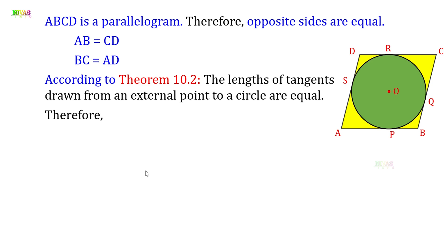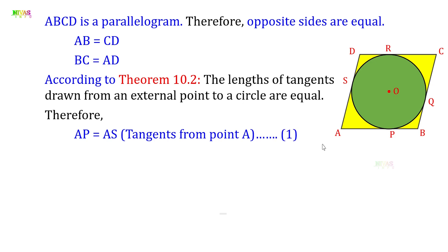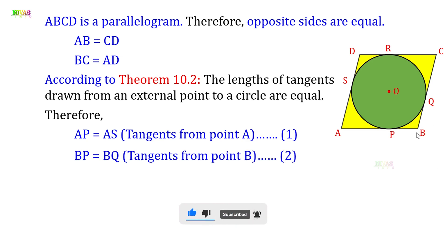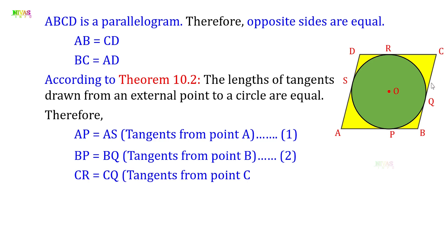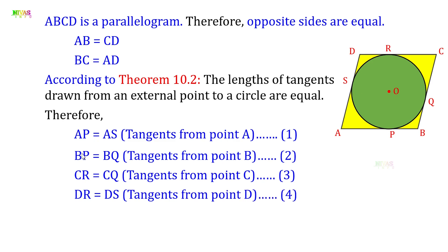Therefore, writing down all four equations: AP = AS, BP = BQ, CR = CQ, DR = DS. Adding all four equations together: AP + BP + CR + DR = AS + BQ + CQ + DS.